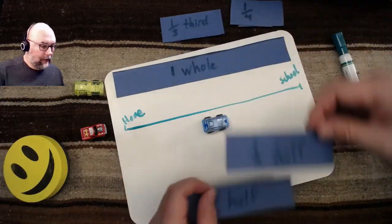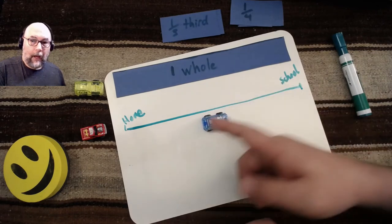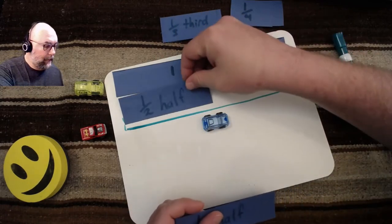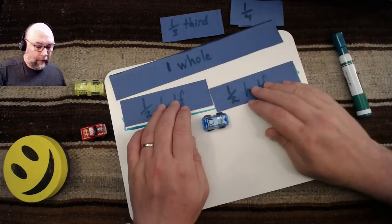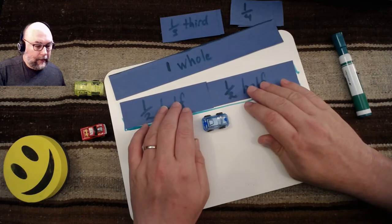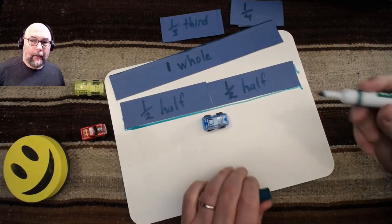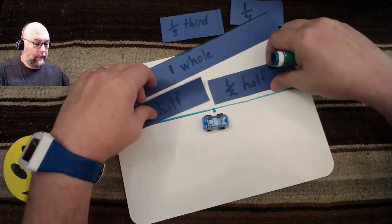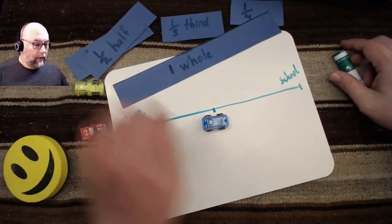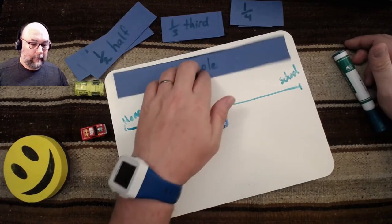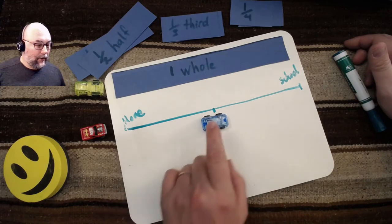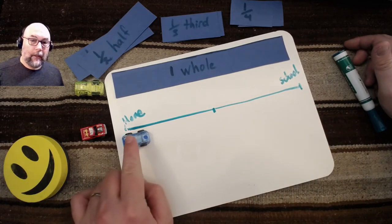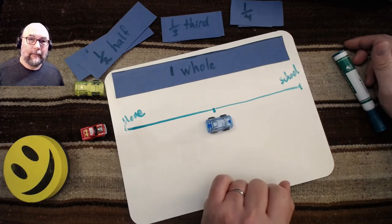Let me show you what that means. These are my half strips and you've probably, you may have heard this before, but this car is about halfway there because I can cut this in the middle and I have two equal size pieces. Let me show you. So if I take this line and I cut it in half, I will have about two equal size pieces that go from home to school.